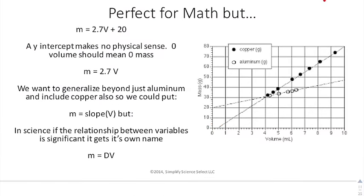Once again, we have this idea of M equals 2.7V plus 20. That makes perfect sense for math. But once again, that 20 doesn't make any sense. I showed you why we can kind of disregard that 20. If we take out the mass of the container itself, then we can say, what makes physical sense is M equals 2.7V.